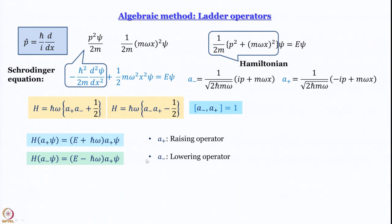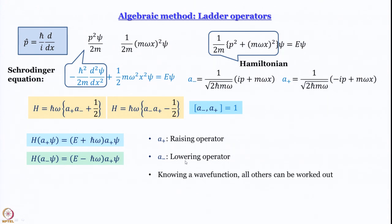Similarly, when a_minus operates on ψ, the eigenvalue for the new wave function is E − ℏω. So a_minus is called a lowering operator. The important thing is that if we know one wave function, we should in principle be able to work out the others by going up and going down the ladder using the appropriate ladder operator. If you know the energy of one level, we can work out all others.